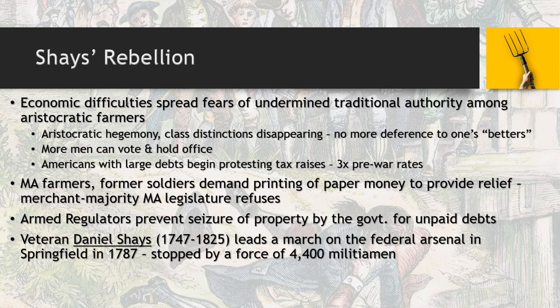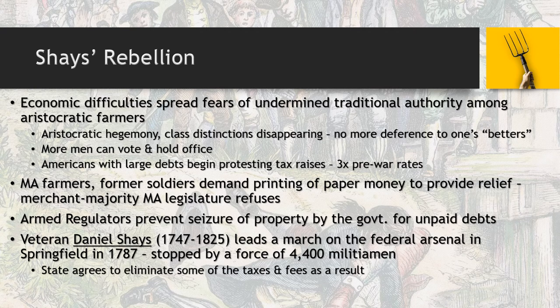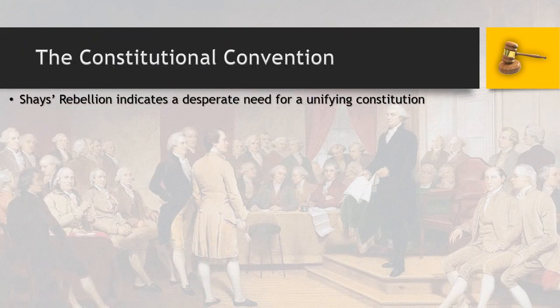Enter Daniel Shays — this is where we get the term Shays' Rebellion. Shays is a veteran of the American Revolution who takes a group of men to the federal arsenal in Springfield in 1787, trying to arm themselves by taking it over. A force of 4,400 militiamen meets them there and prevents them from doing so. They come toe-to-toe with the federal government and are forced to stand down. Immediately thereafter, the state finally agrees to wind down some of the taxes and fees because they don't want another armed conflict.